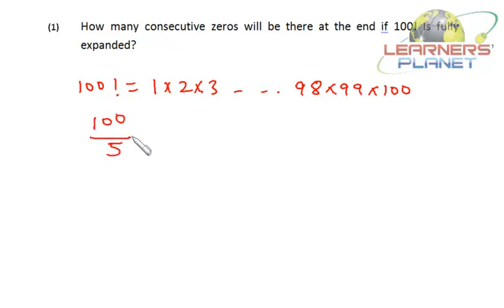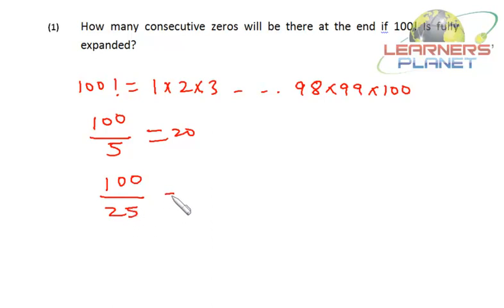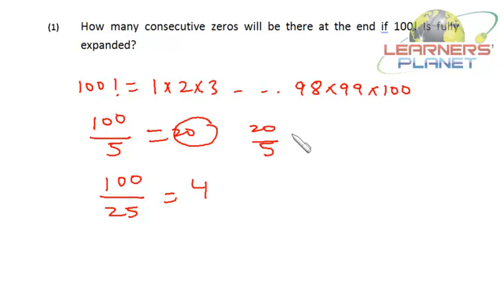But we'll have extra 5s in the case of 25, 50, 75, and 100 — multiples of 25 — which each carry an extra factor of 5. So let's calculate how many 25s are there in 100: there are 4. Alternatively, we can divide 20 by 5 and also get 4. So in total there will be 20 + 4 = 24 fives in 100 factorial.